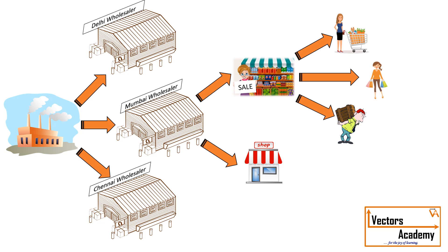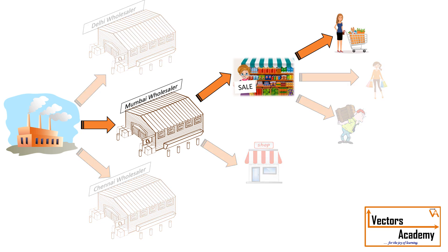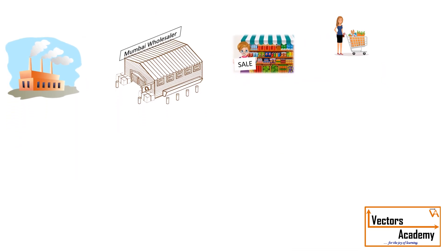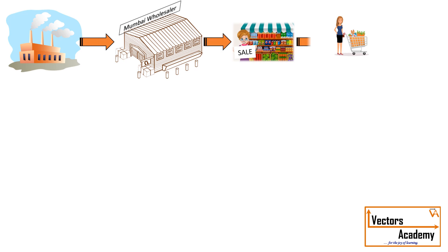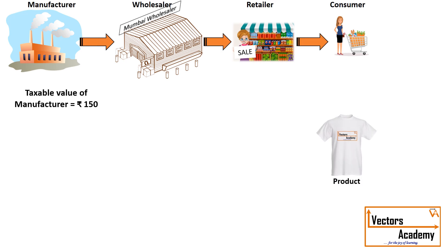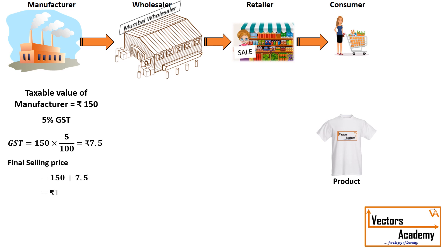The manufacturer decides the price of the product depending upon its cost. If it decides the product price is to be 150 rupees, and depending upon the type of the product, the GST is decided. If the GST on this particular product is 5%, that comes out to be 7.5 rupees, making the final price 157.5 rupees. The wholesaler purchases the product for 157.5 rupees.